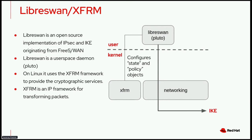As a user, you configure LibreSwan to define that with, for example, host B, you want to encrypt traffic in a certain way. Using that information, Pluto attempts to negotiate a security association over IKE with the remote host. If it successfully negotiates that security association, it installs it into the kernel, into the XFRM framework. XFRM defines two objects: a state object and a policy object. LibreSwan sets up policy objects saying, for example, if you're talking to host B, encrypt the traffic in a certain way. Once that's in place, traffic that is sent gets encrypted accordingly.